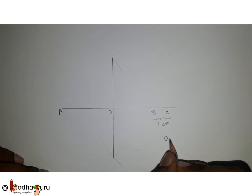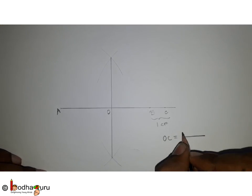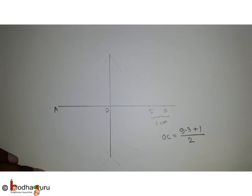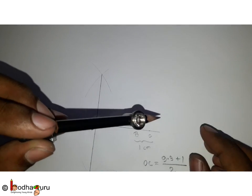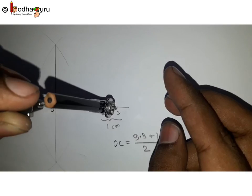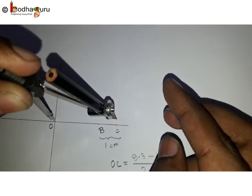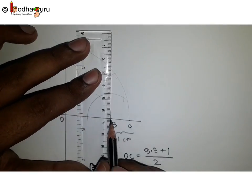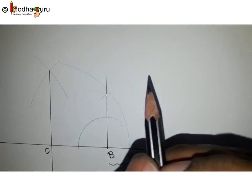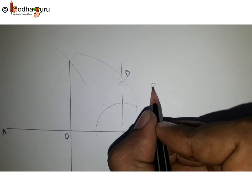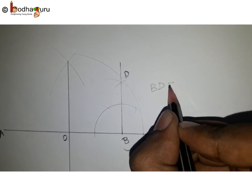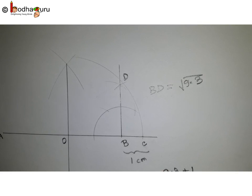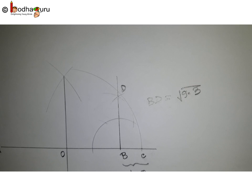So this O is the midpoint of AC, and it will be (9.3 plus 1) by 2. We take the measurement of OC and draw a semicircle with center O. We draw a perpendicular on B such that it intersects the semicircle at point D. Here, this BD will be square root of 9.3. How?